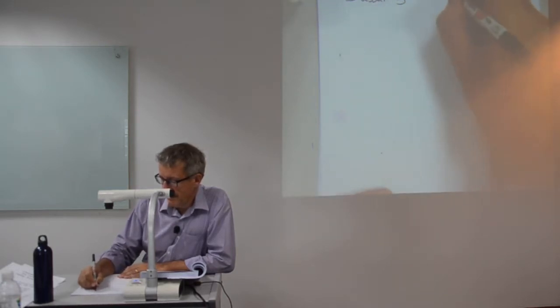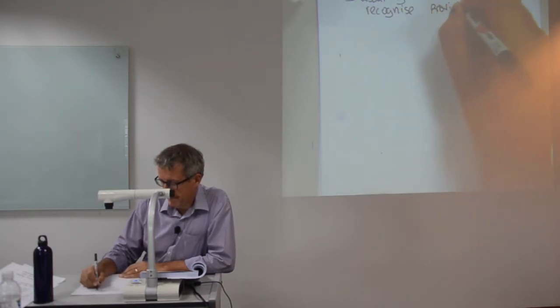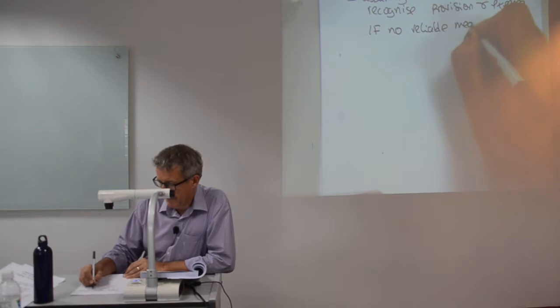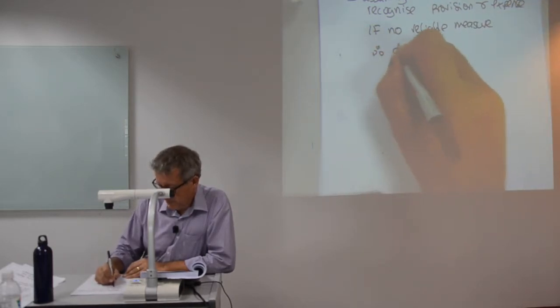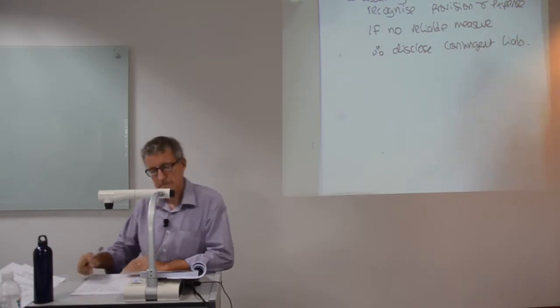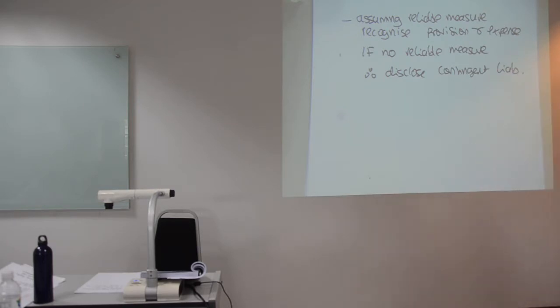So, assuming reliable measure, recognize provision and expense. If no reliable measure, therefore, you disclose as a contingent liability. So, assuming that there is a reliable measure, you would recognize a provision and an expense. Debit P&L, credit provision. Debit P&L, credit provision. If there's no reliable measure, you would have to disclose it as a contingent liability. Yeah, I'm happy with that idea. I'm happy with that approach.